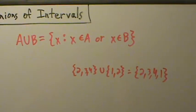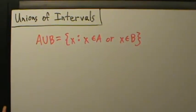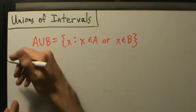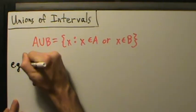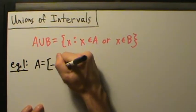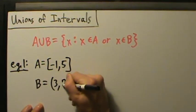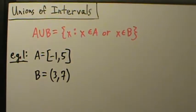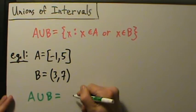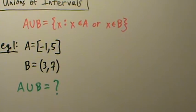The same principle applies for intervals. With interval notation it can be a little tricky, but it's actually much simpler if we draw a number line. So let's do some examples. It's still the same concept of a union — we're just applying it to intervals now.